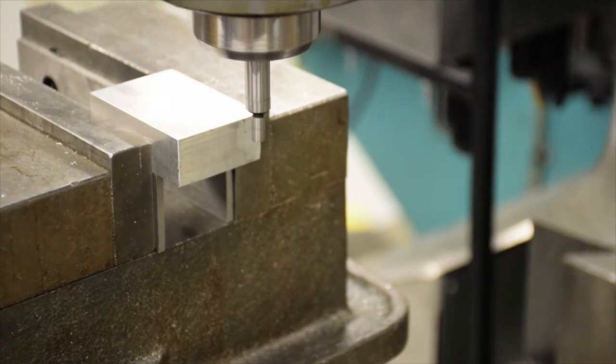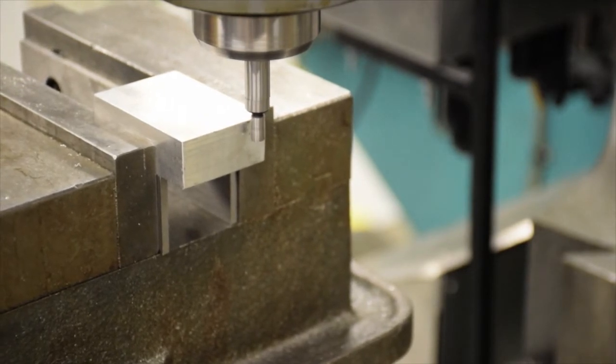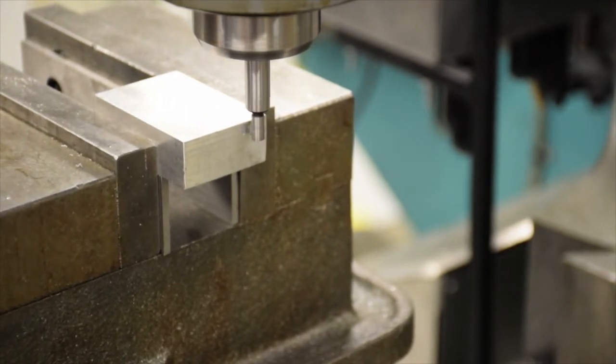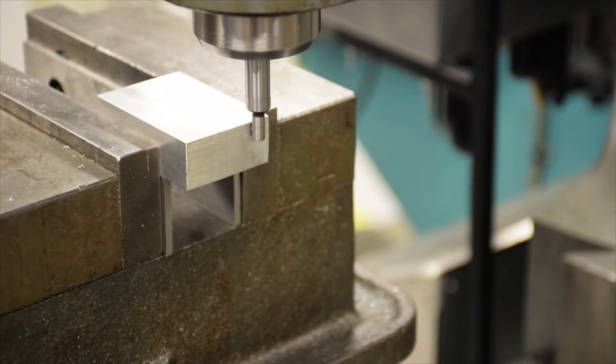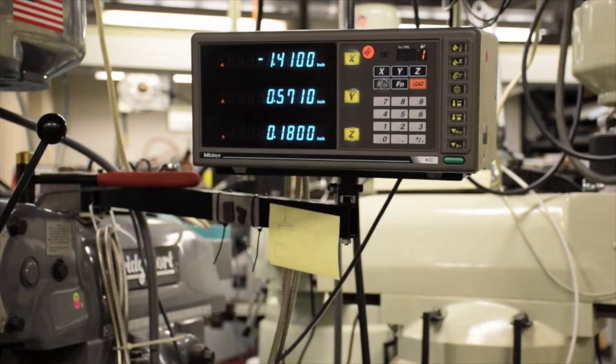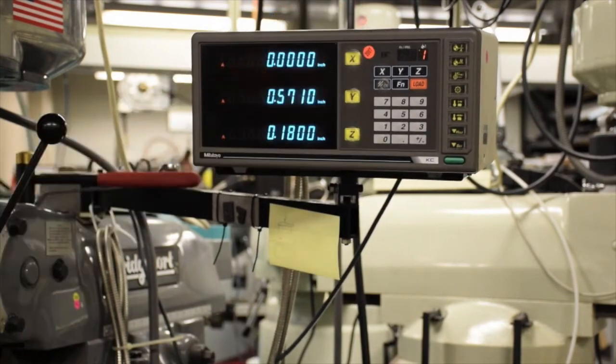Next we will find zero. While the machine is running, take the edge finder to the side of the block that you will be working off from. Move the edge finder closer until it kicks out like shown in the video. Without moving the controls, set the appropriate zero.